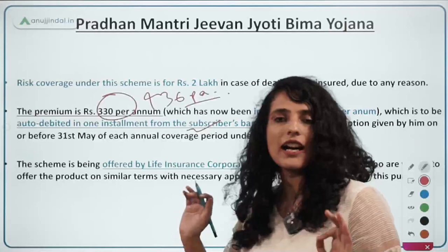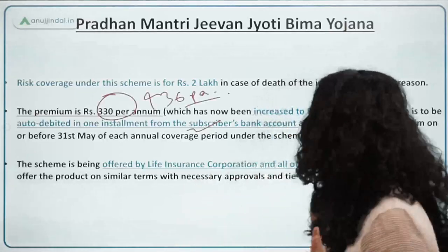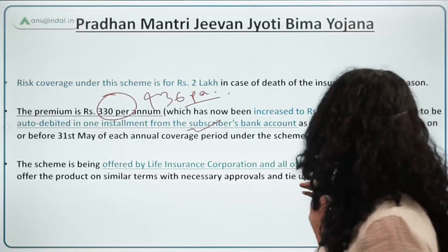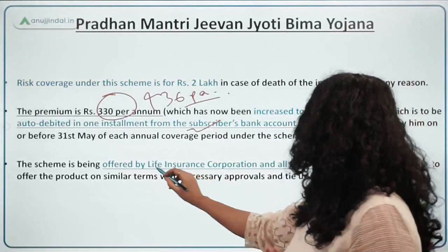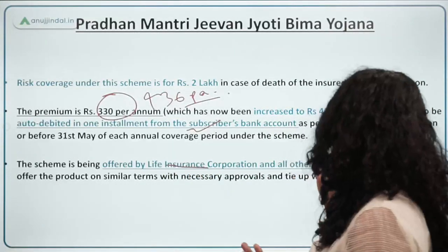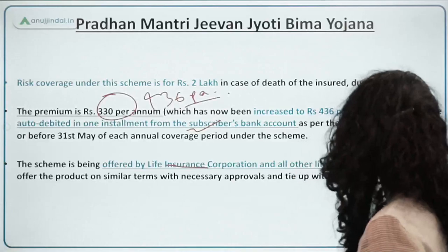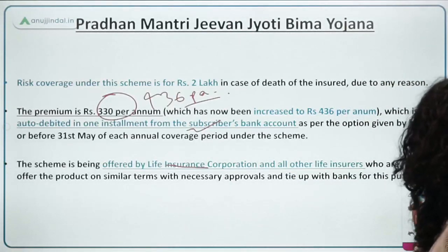Just as someone who could afford 330 per annum can equally afford 436 — this is how inflation indexing of the premium amount works. The premium is auto-debited directly from the bank account of the subscriber, and the subscriber becomes eligible for insurance. This scheme is offered by the Life Insurance Corporation of India.